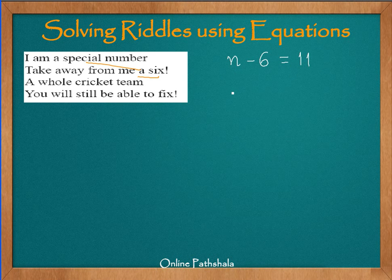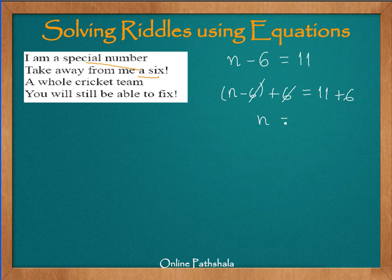To solve this equation, we have n minus 6. We add 6 on both sides — on the left-hand side and on the right-hand side. So we have 11 plus 6 on the right-hand side. When the two 6s cancel out, we have n equals 17. So the special number here is 17.